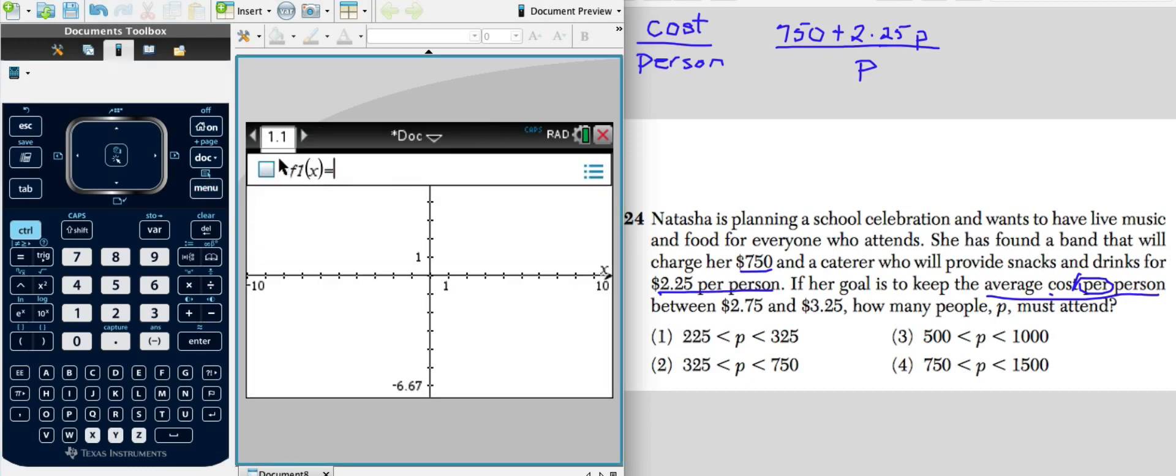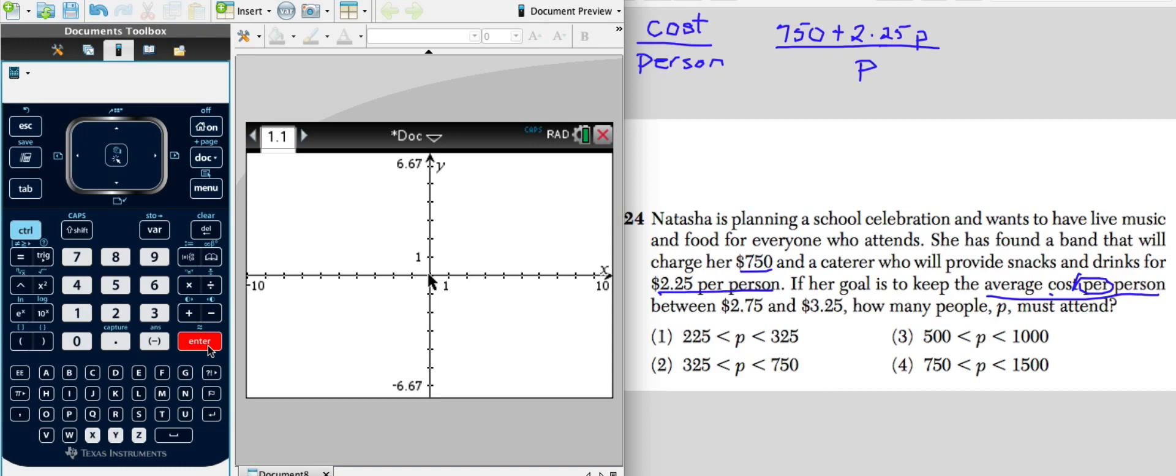We're going to use the table, but let's enter our equation in. Now remember, we need to put parentheses around the top expression. So we have 750 plus, we're just going to use x as a variable, 2.25x, close my parentheses, and we're going to divide that by the total number of people. Click enter. See nothing. Don't worry.